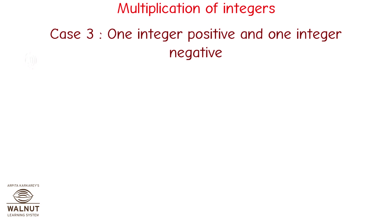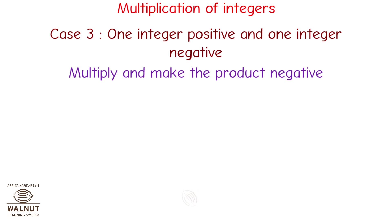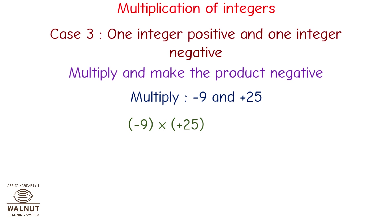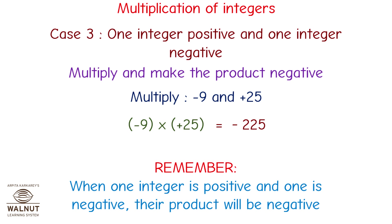Case 3: one integer is positive and one integer is negative. Multiply and make the product negative. Multiply minus 9 and plus 25. Minus 9 multiplied by plus 25 is equal to minus 225. We multiply the numbers directly and get the answer. Since one number is positive and one number is negative, the product becomes negative. Remember, when one integer is positive and one is negative, their product will be negative.